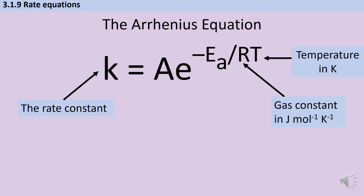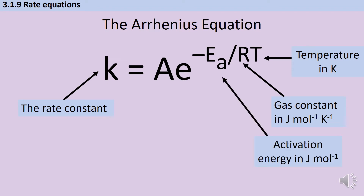Because the gas constant is in joules per mole per Kelvin, and because we need to be using units of the same magnitude as each other for all our different terms, that means that activation energy is also given in joules per mole. The activation energy for pretty much any chemical reaction tends to be quite a large number in joules per mole, so it's usual when writing down the activation energy at the end of a question to give it in kilojoules per mole. Just like with Gibbs free energy equations, you almost certainly need to convert — and that's an easy step to miss.